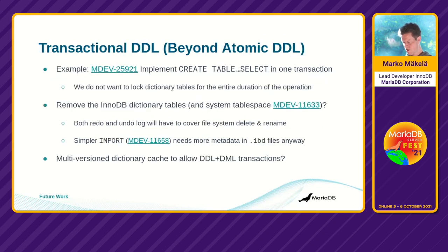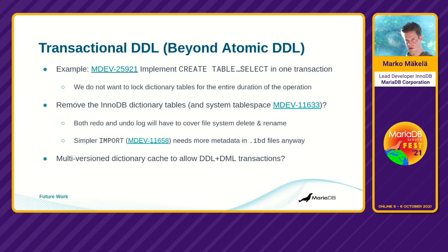After atomic DDL, if we wanted to aim higher we could go for transactional DDL. One example would be to have CREATE TABLE ... SELECT execute in a single transaction. Of course we don't want to lock the dictionary tables for the entire duration of the operation — that is a challenge and may need to be split in some way, or we would have to defer changes to dictionary metadata until commit.